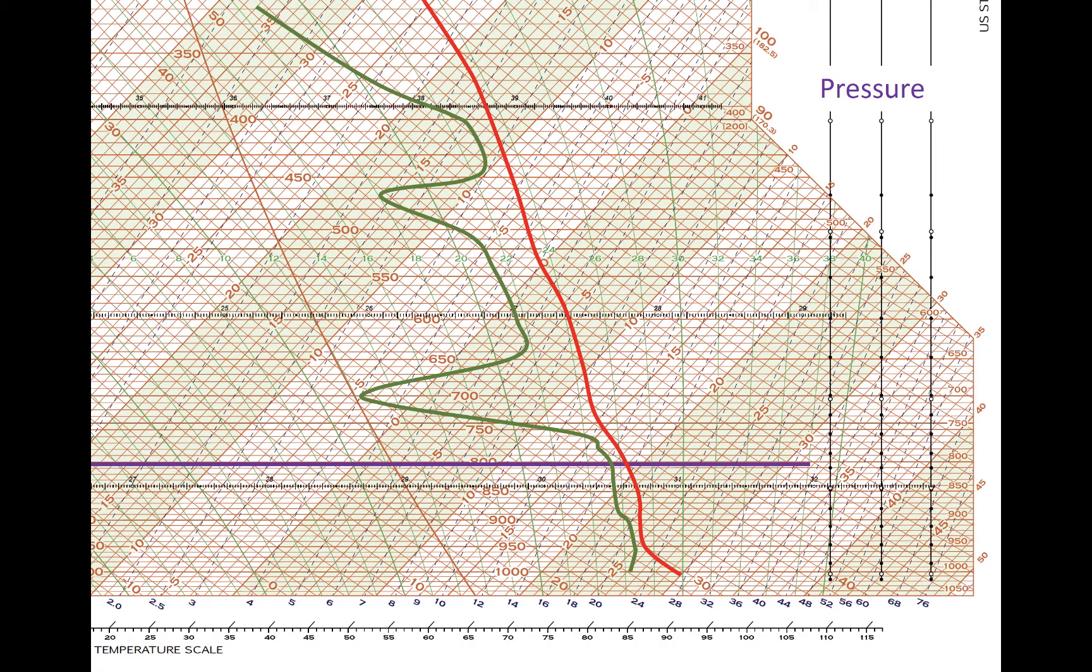Zooming in on part of the plot, let's look over what the different lines represent. The horizontal lines represent pressure levels, one of which is highlighted in purple here. In this plot, they are labeled every 50 millibars, and the lines are separated into 10 millibar increments.